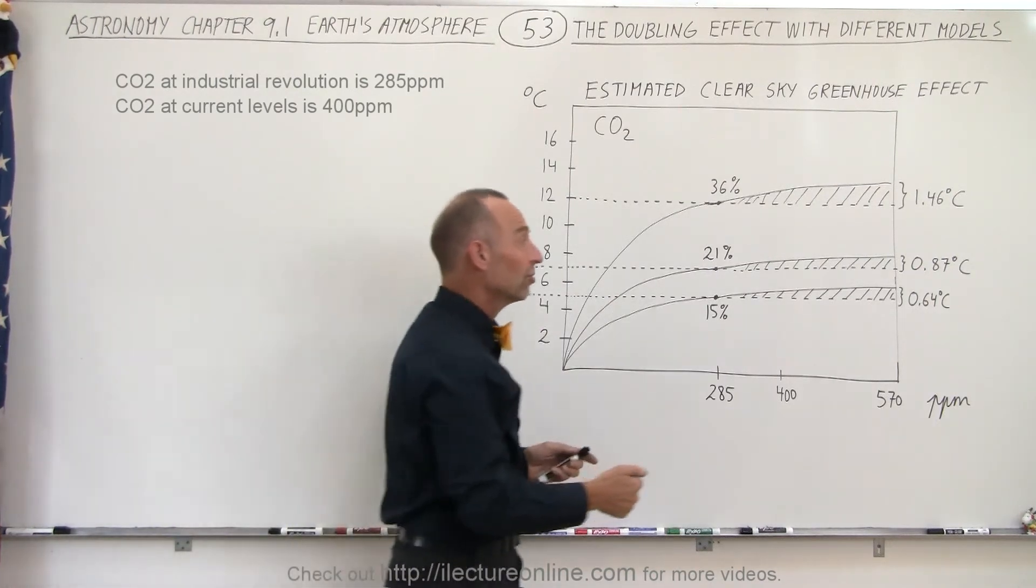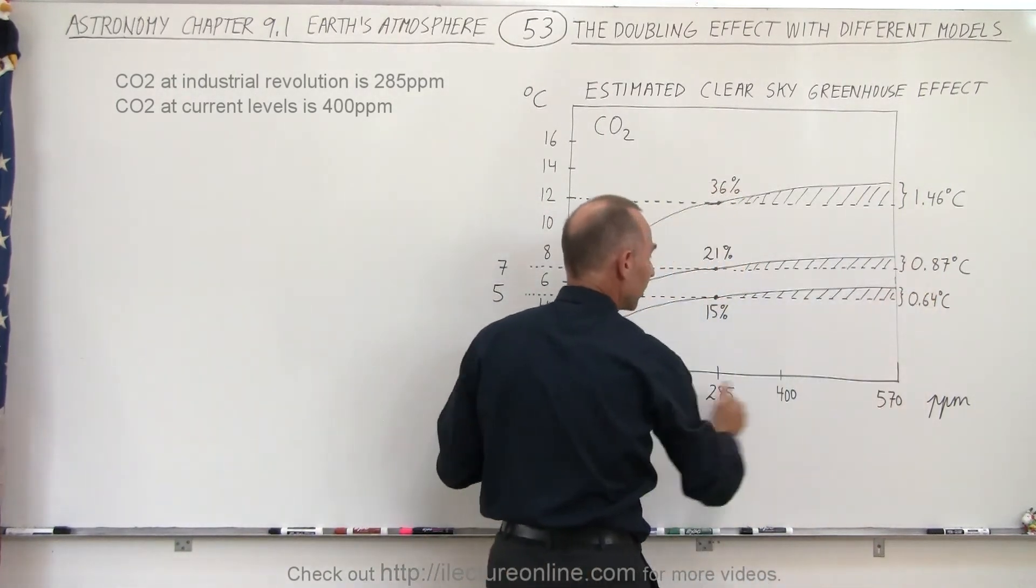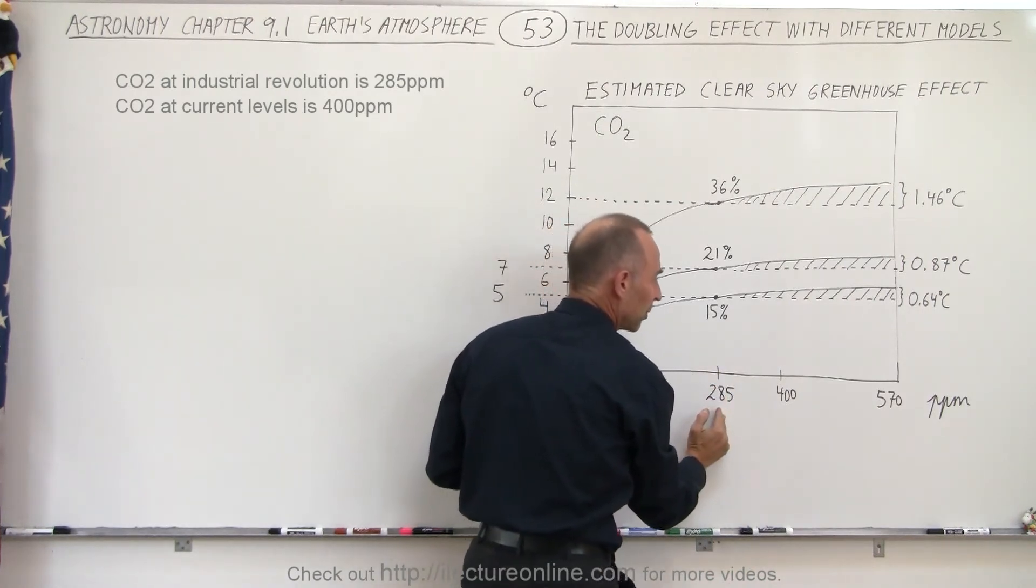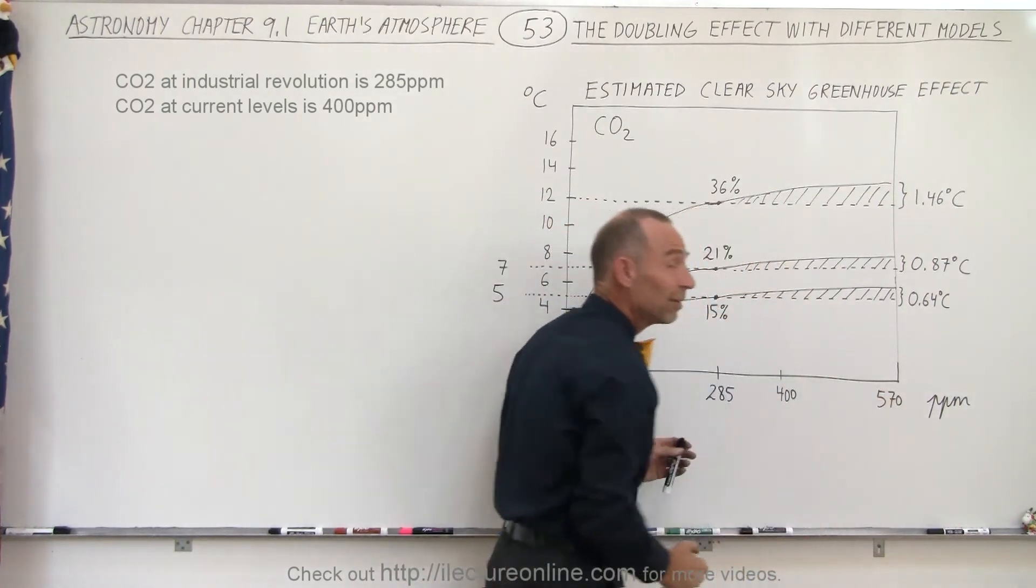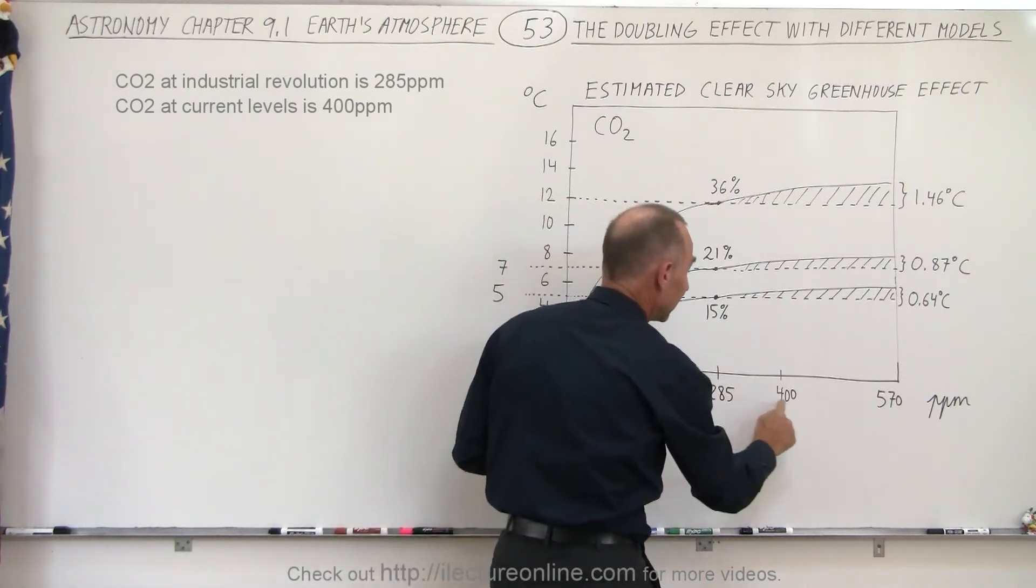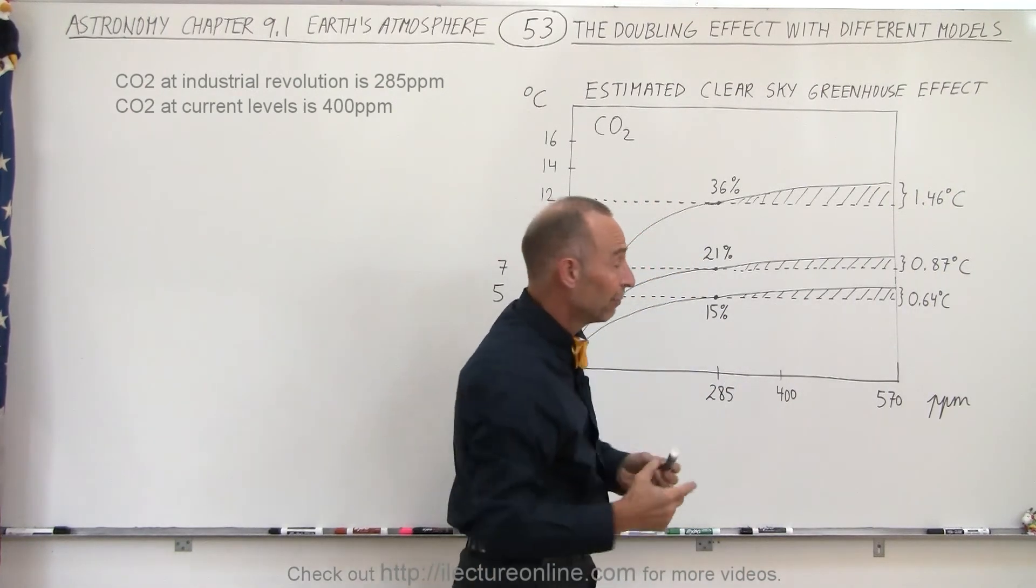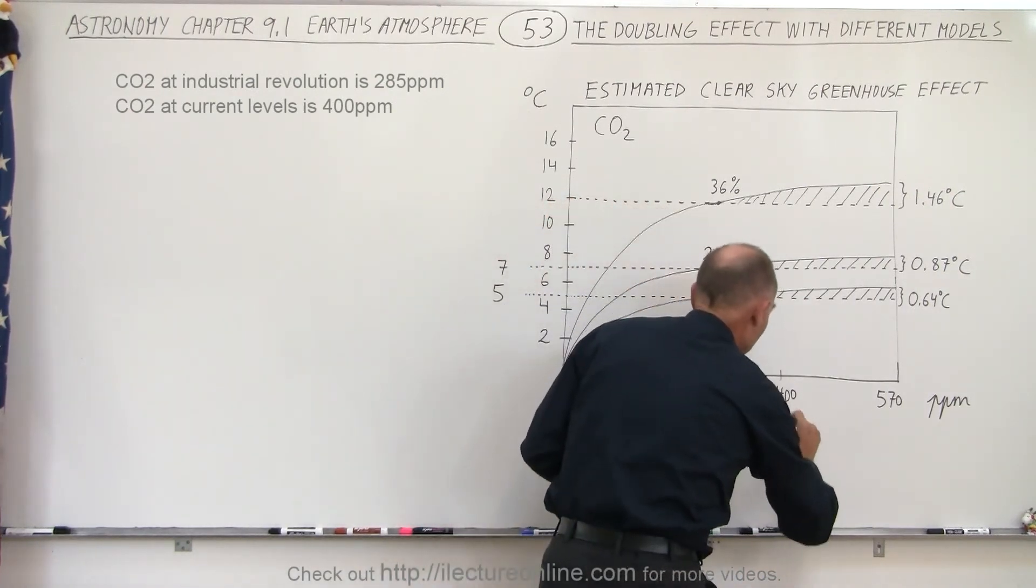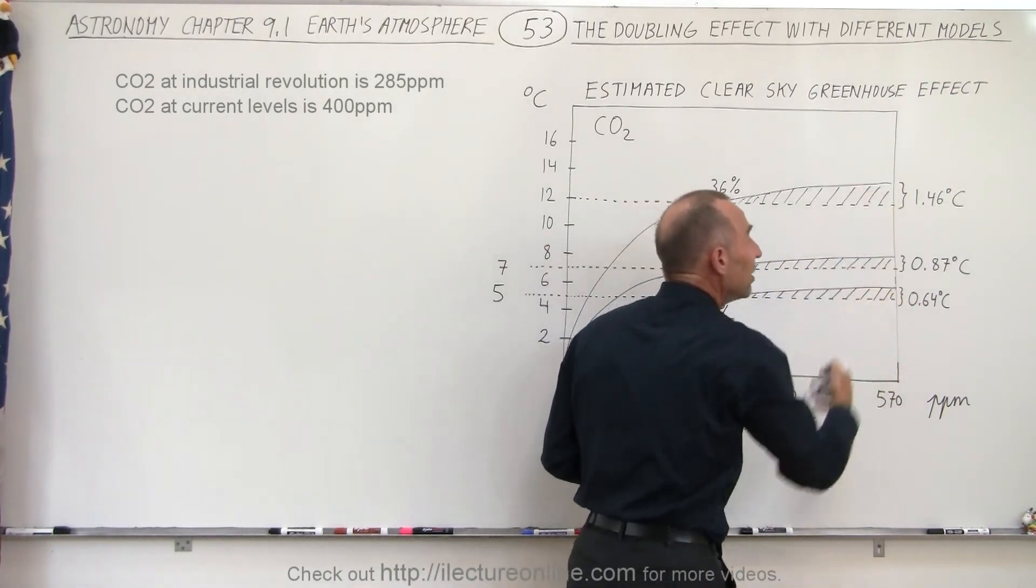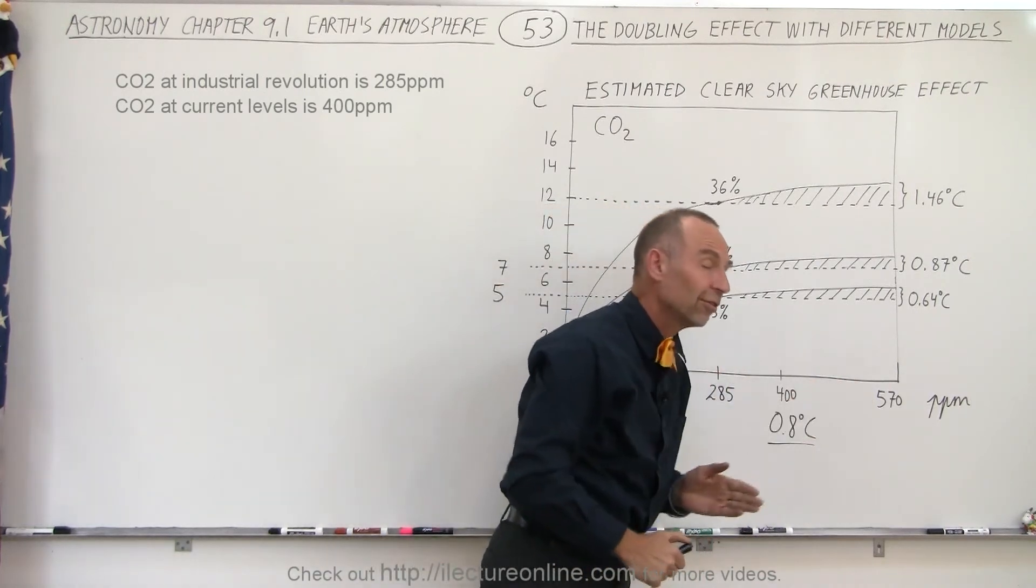In the end, what is interesting is that the temperature increase for a doubling of carbon dioxide from pre-industrial levels of 285 parts per million to a doubling to 570 parts per million, and making the assumption that currently the increase from 285 to 400 is blamed for an increase of about 0.8 degrees centigrade, well then there isn't much of an increase to be expected for the next increase from 400 to 570.